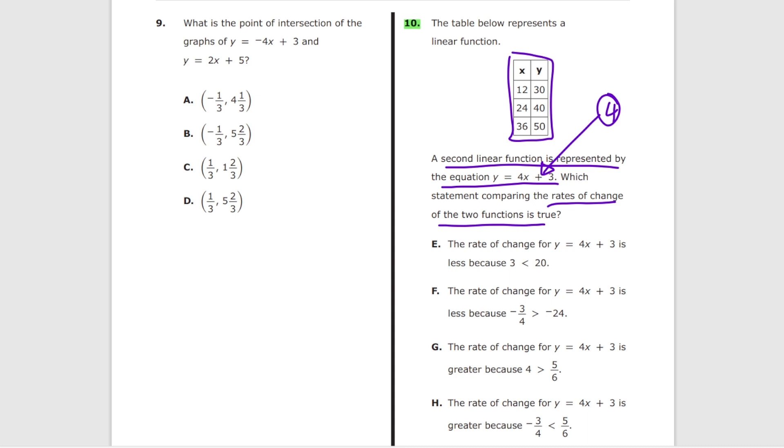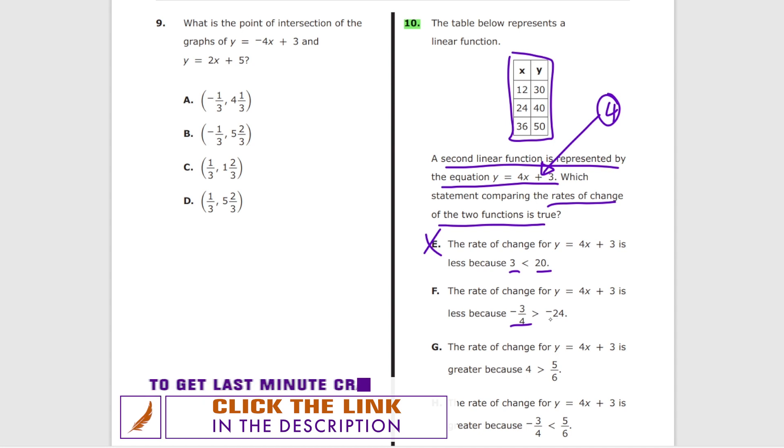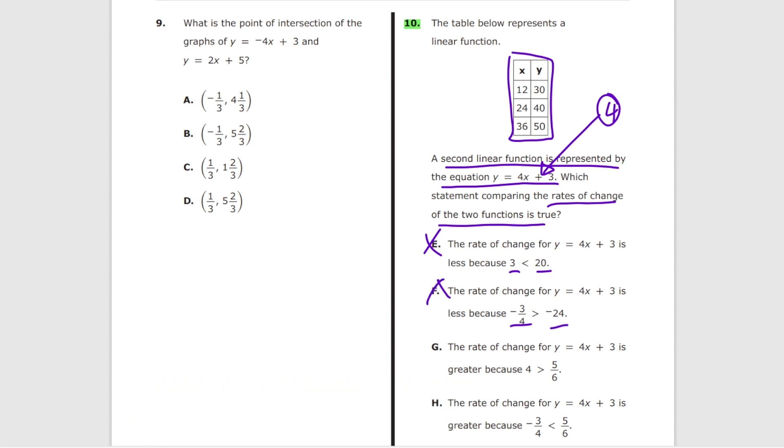Let's go through multiple choices. The rate of change, blah blah blah, 3 and 20. I don't see 4 anywhere, it's out. Negative 3 quarters, negative 24. I don't see 4 anywhere, it's out. For G, I finally see the 4 so it's probably going to be my answer. H, it's negative 3 quarters and 5 over 6. I don't see 4 anywhere so H is also wrong. There's no need to solve the linear equation from the table, just use a little bit of logic.